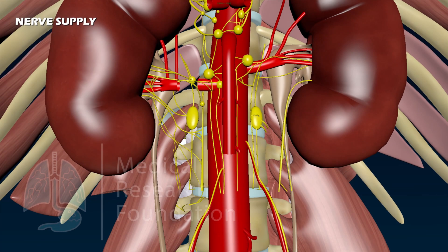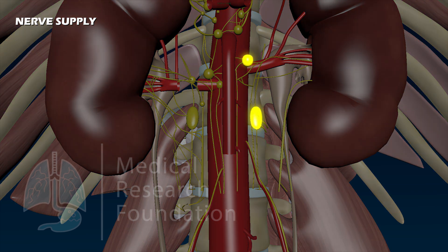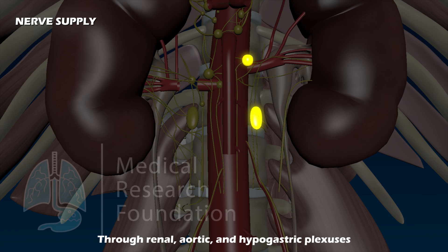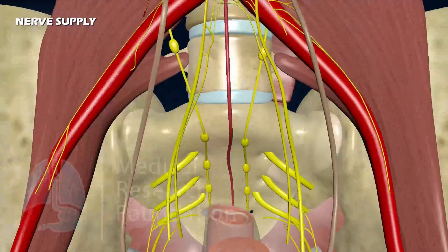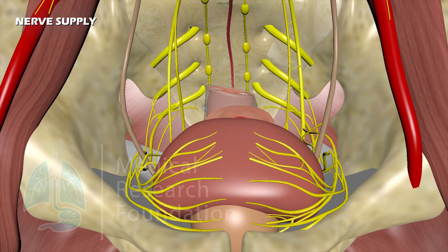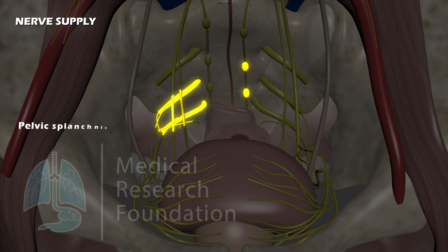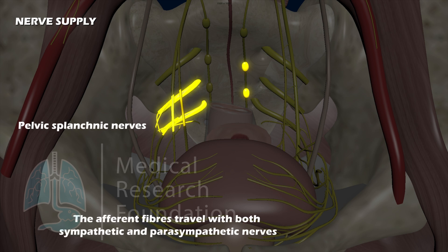The sympathetic supply of the ureter is derived from T12 to L1 spinal segments through the renal, aortic, and hypogastric plexuses. The parasympathetic supply is derived from S2 to S4 segments. The afferent fibers travel with both sympathetic and parasympathetic nerves.